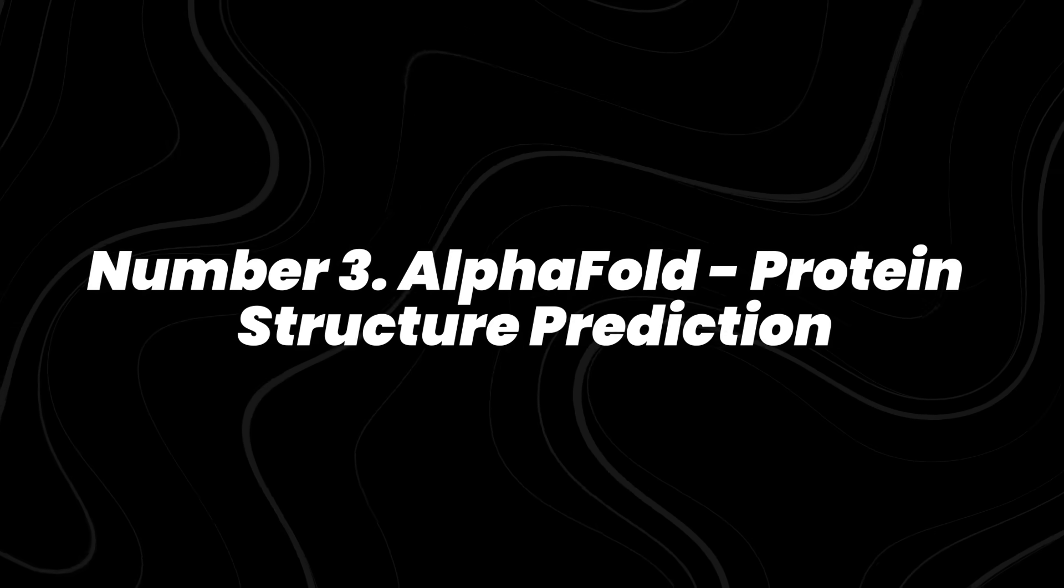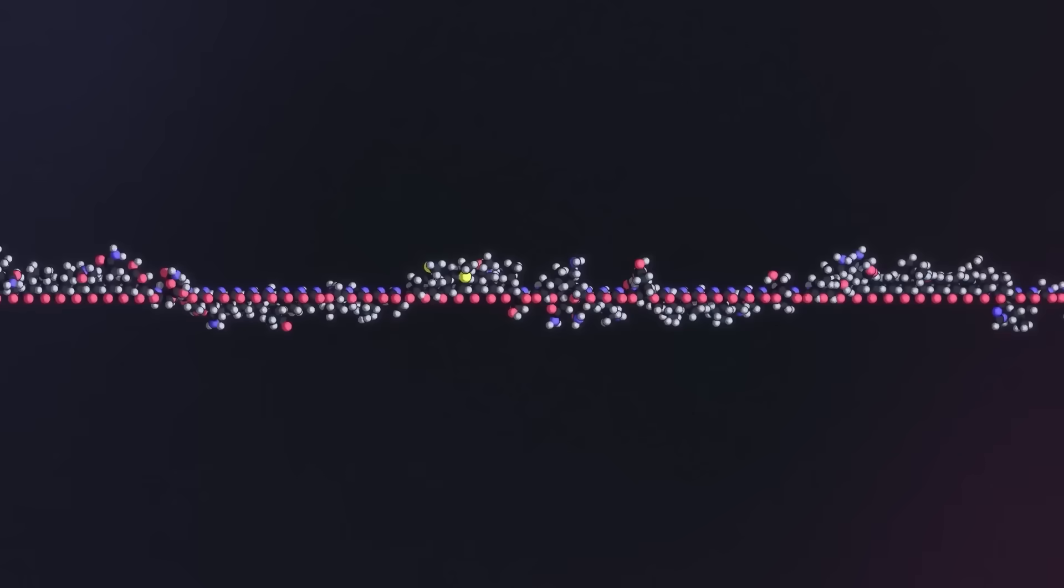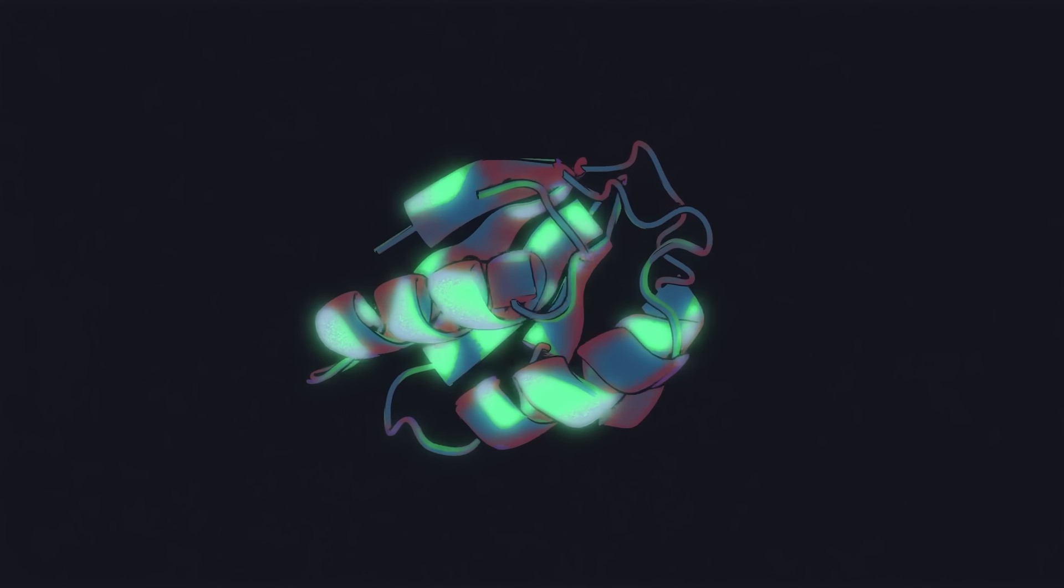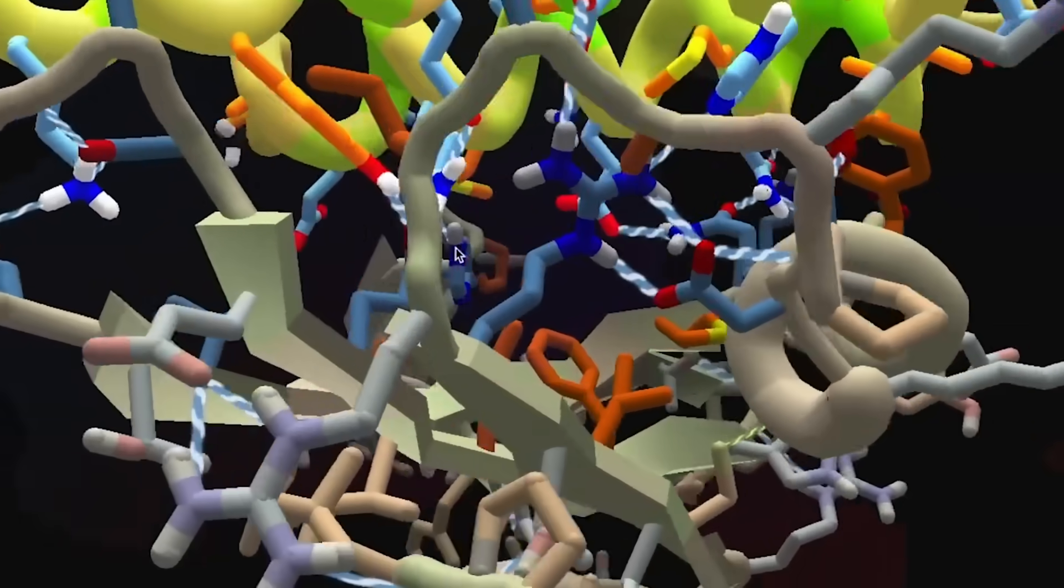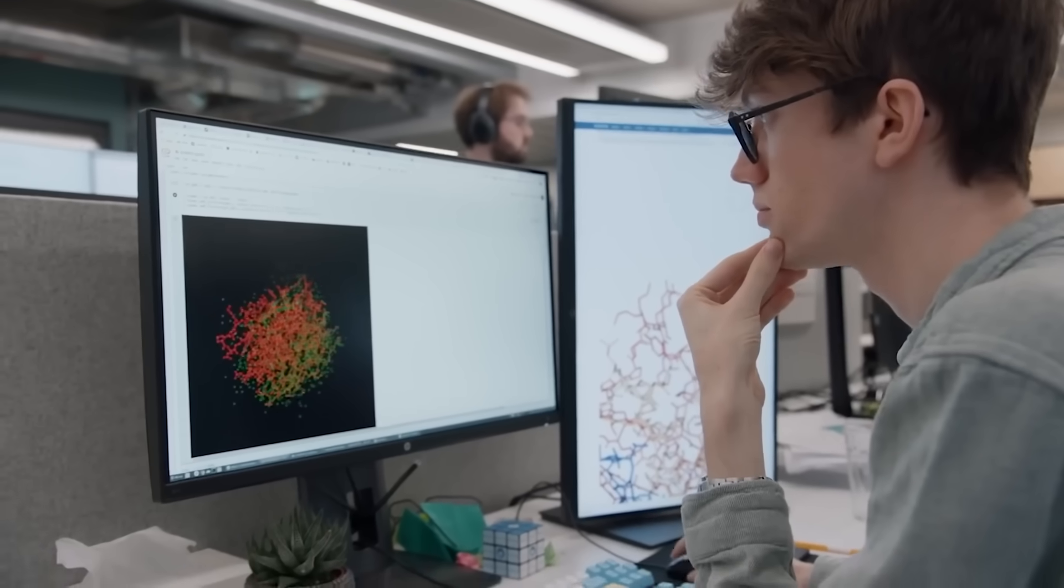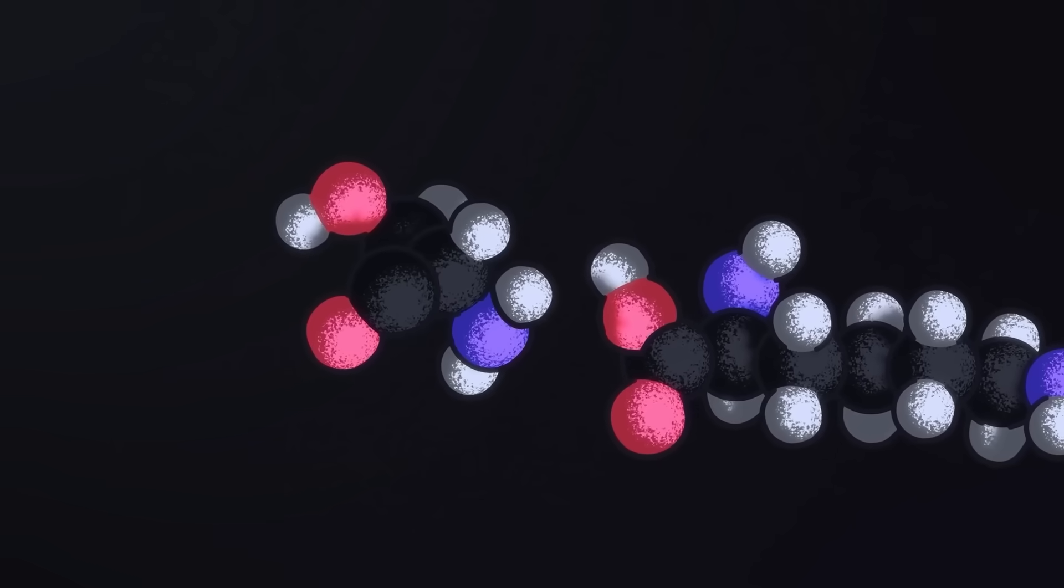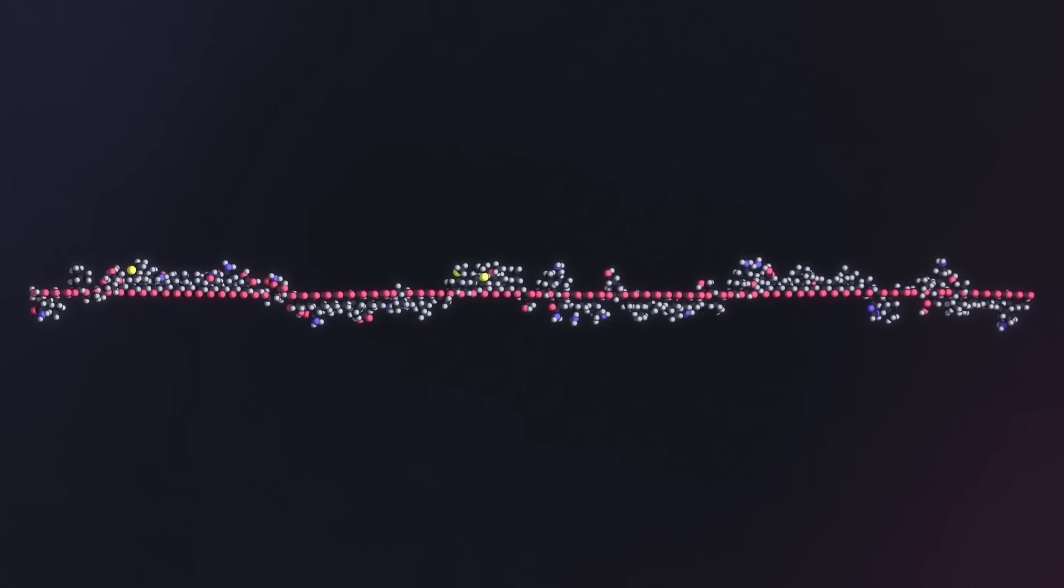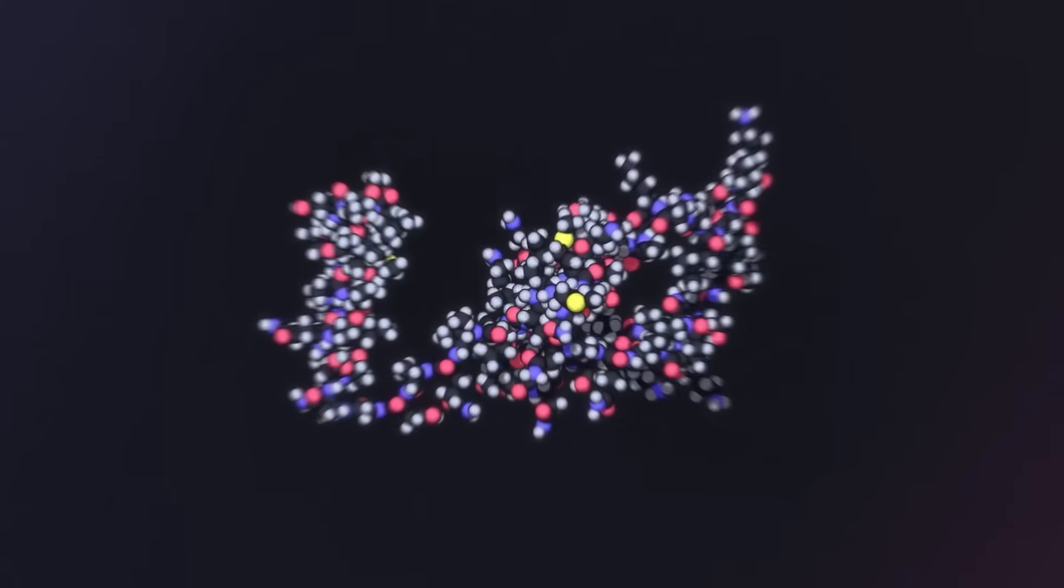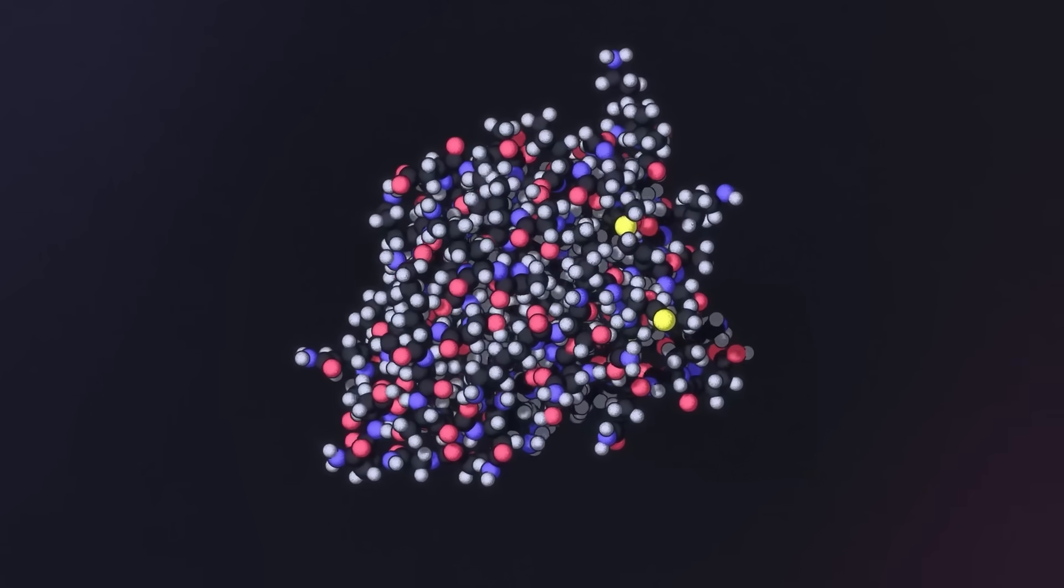Number 3, AlphaFold: Protein Structure Prediction. Predicting how proteins fold was one of biology's biggest mysteries. Proteins shape every process in the human body, and misfolding can cause diseases like Alzheimer's. DeepMind's AlphaFold solved that puzzle. By 2022, it had mapped over 200 million protein structures, covering nearly every known protein on Earth.